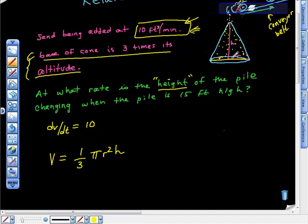They say the base of the cone is three times its altitude. Well, the base is the diameter, isn't it? So half the diameter is two radiuses, so we can also say that 2r equals 3h.